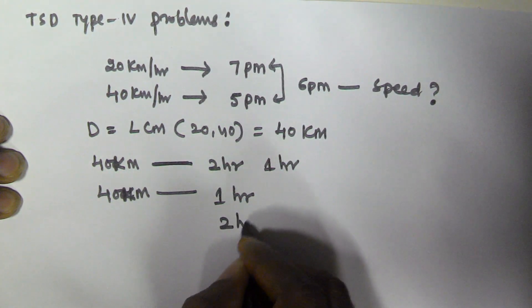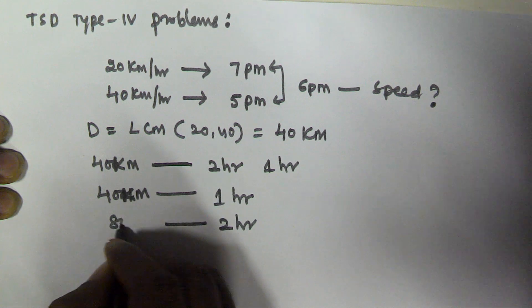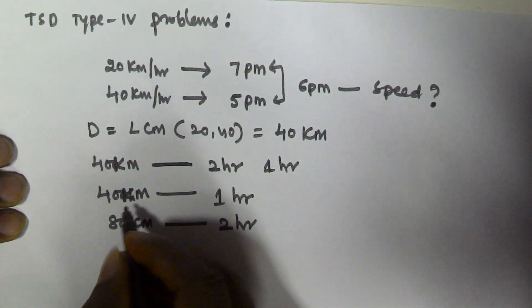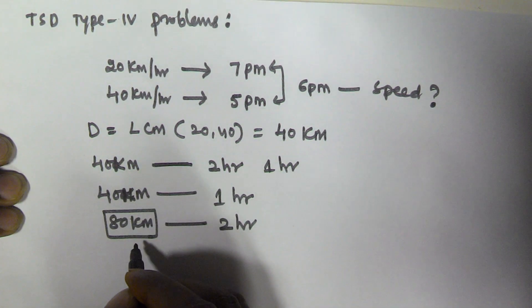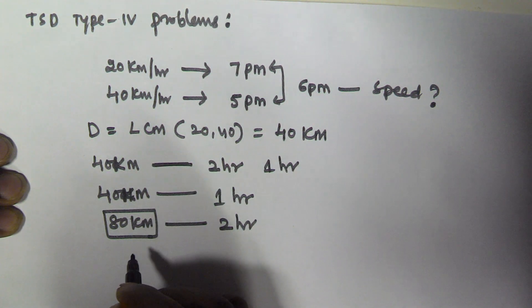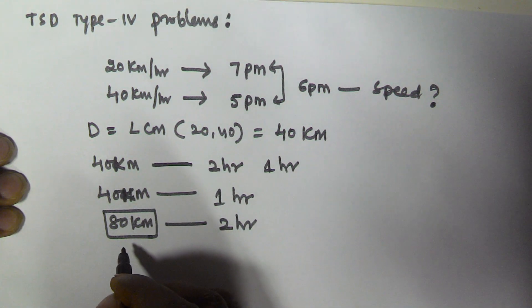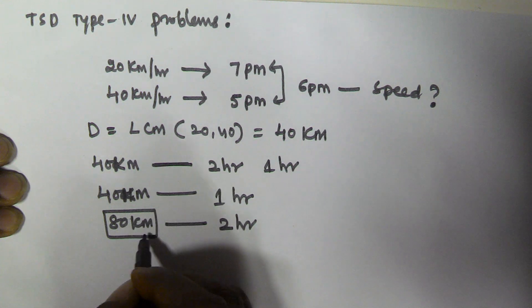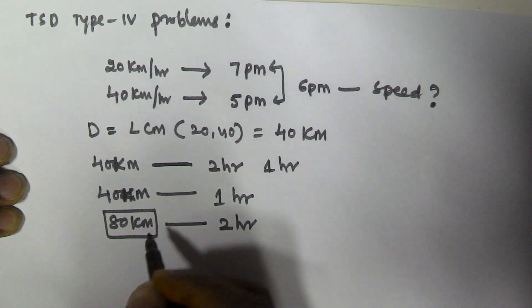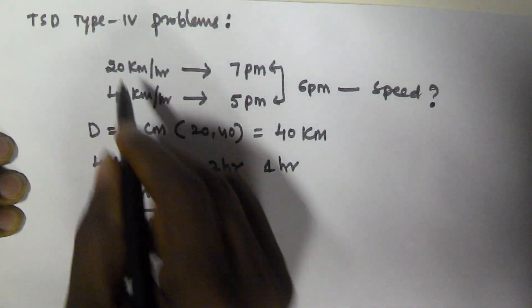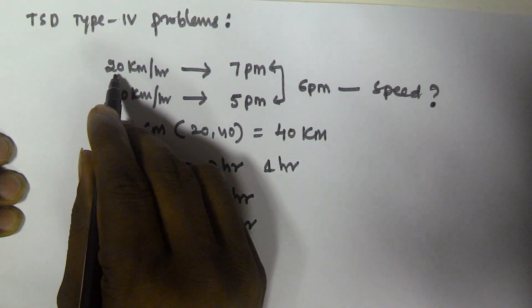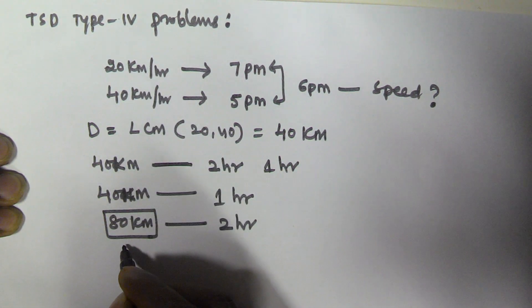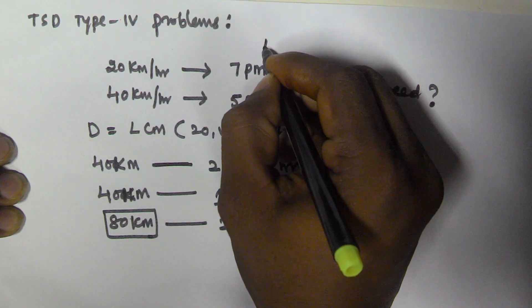But the difference between 5 pm and 7 pm is 2 hours. So 2 hours corresponds to 80 km — this is the actual distance between his home and office. So the actual distance is 80 km. On the first day he is travelling with 20 km per hour, so to cover 80 km he has to travel 4 hours.